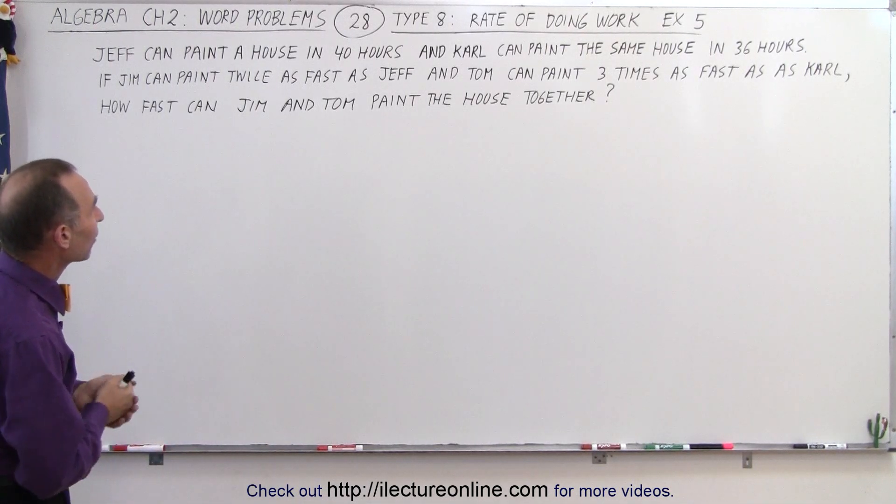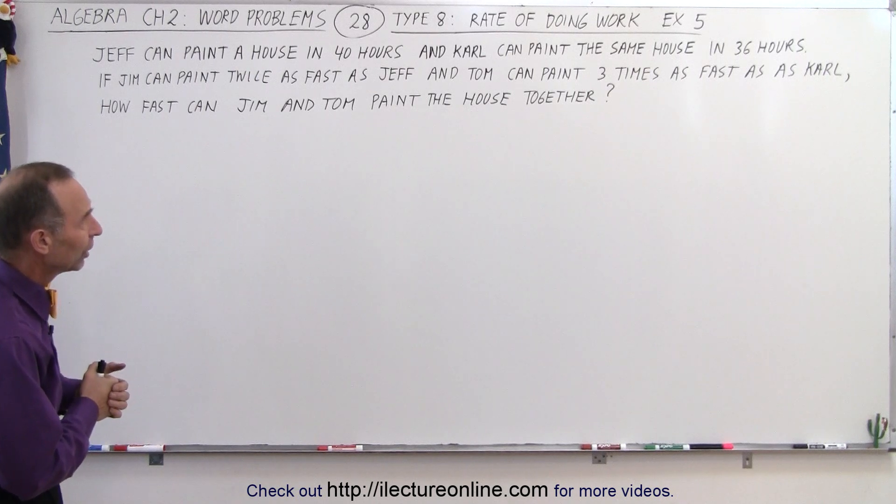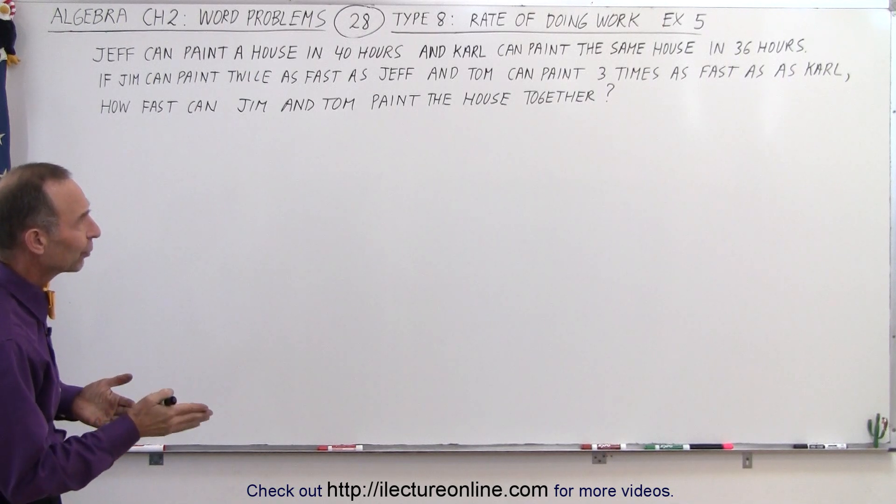Here we have Jeff who can paint a house in 40 hours and Carl who can paint the same house in 36 hours.